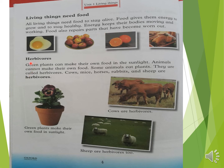Green plants can make their own food using sunlight. Animals cannot make their own food. Some animals eat plants — they are called herbivores. Cows, mice, horses, rabbits and sheep are herbivores.